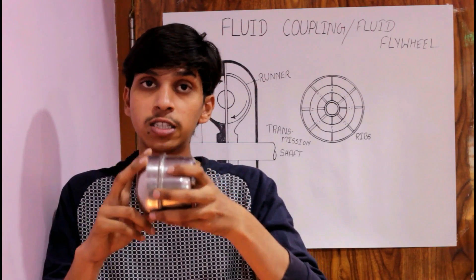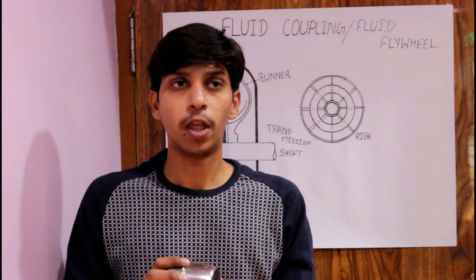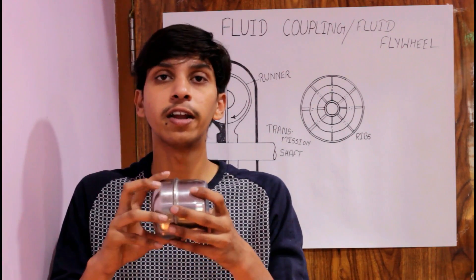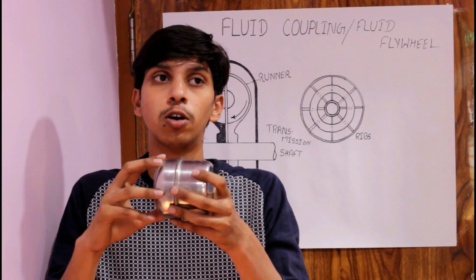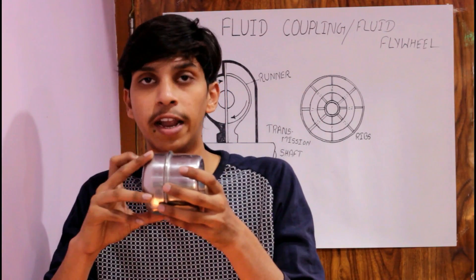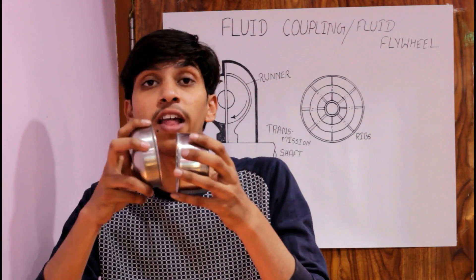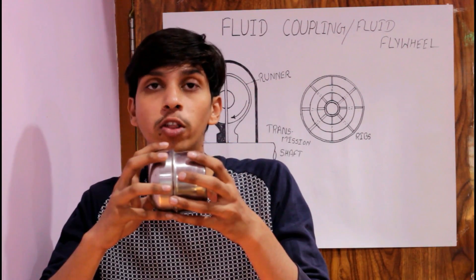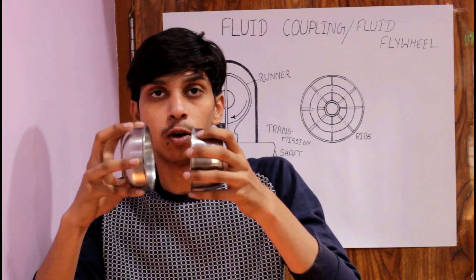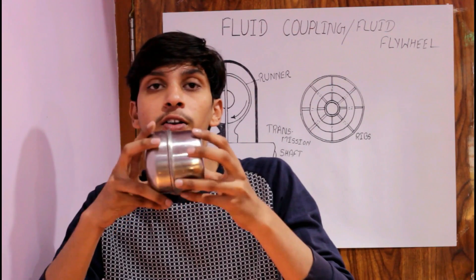So, this is the fluid coupling through which automated transmission becomes possible. In the fluid coupling, consider this case: when the engine is running but you are stationary, at that time the engine runs at idle speed and only the impeller runs. But after some time, when we move on the road, the engine starts spinning at very high speed. At that time, the fluid goes to the runner and both begin moving together, running at the same speed. This is the automated transmission with the help of fluid coupling.